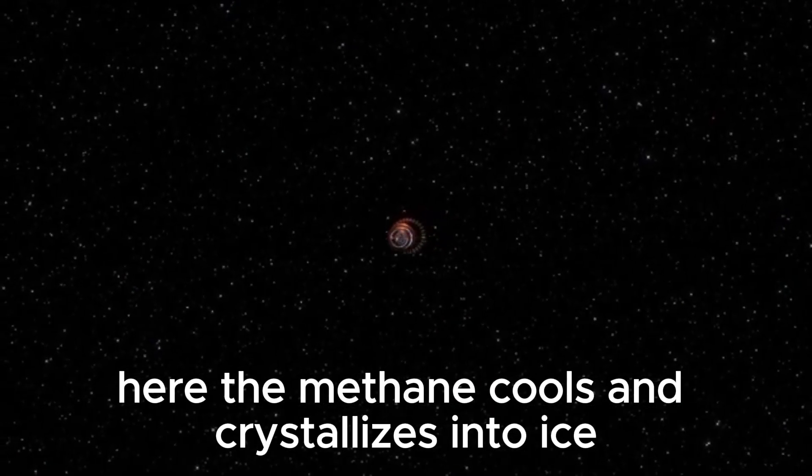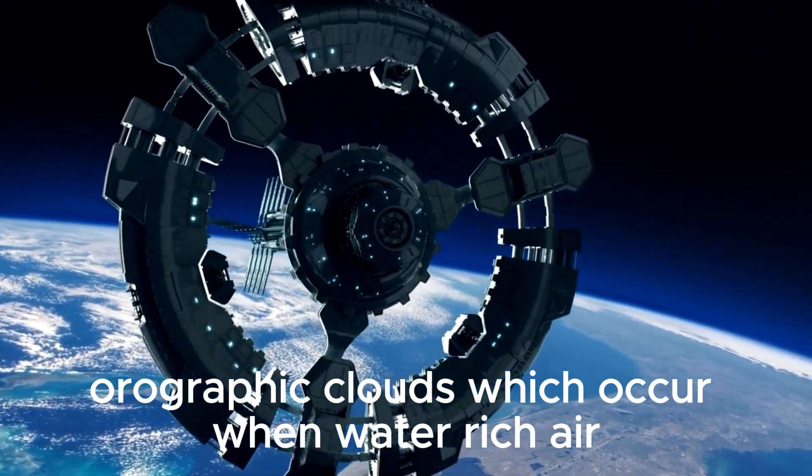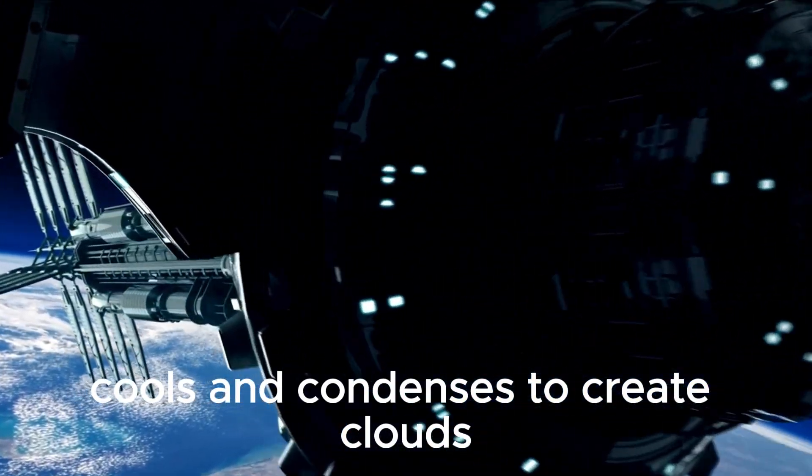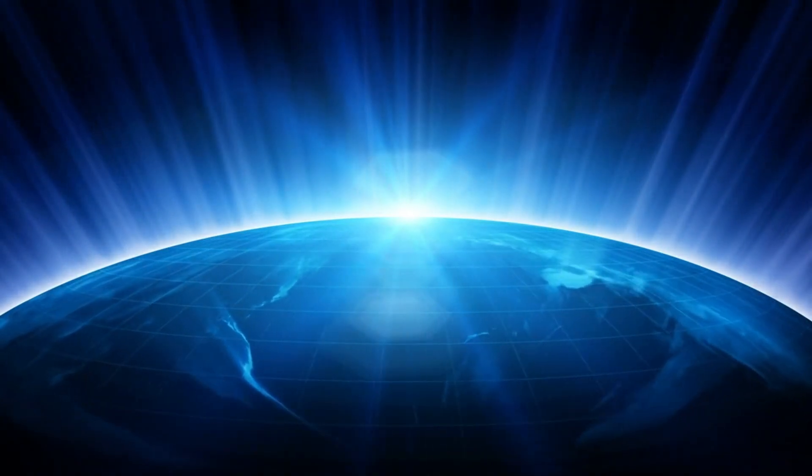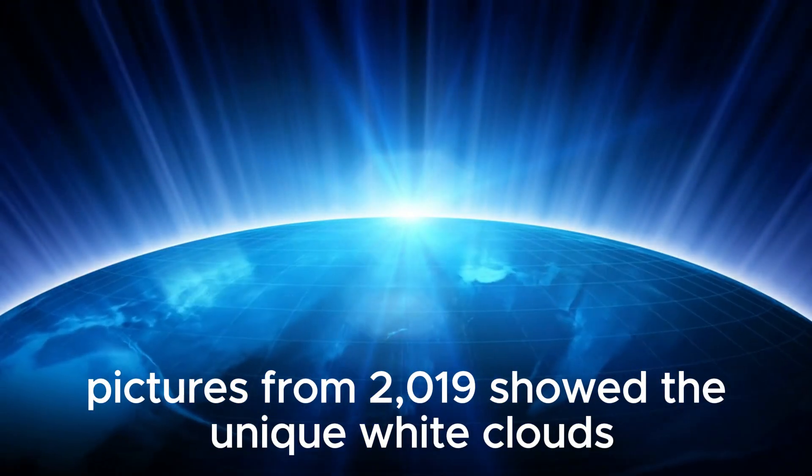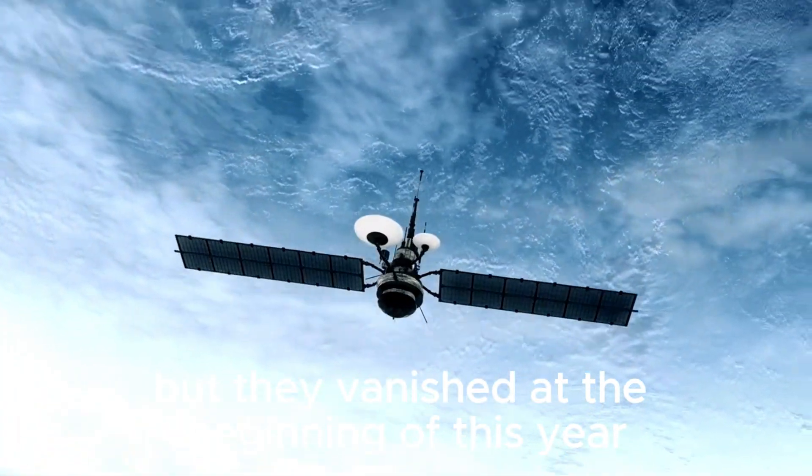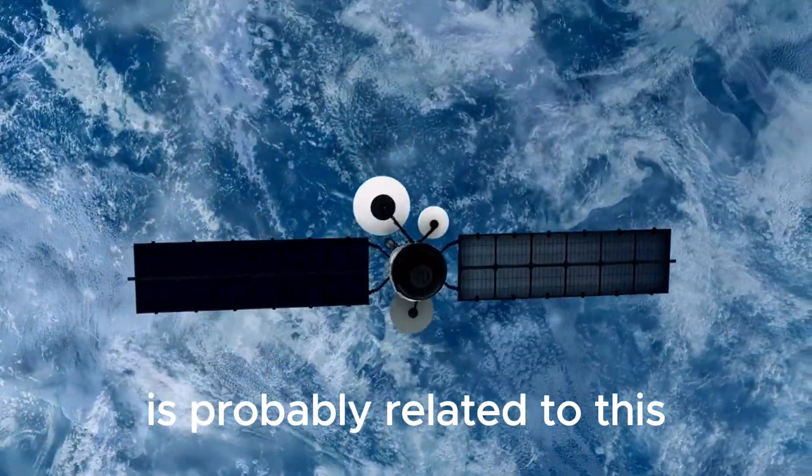Here, the methane cools and crystallizes into ice orographic clouds, which occur when water-rich air pushes up the side of a mountain, cools, and condenses to create clouds. These are traditional on Earth. Pictures from 2019 showed the unique white clouds, but they vanished at the beginning of this year. The peculiar behavior of the Black Typhoon is probably related to this, or perhaps not.